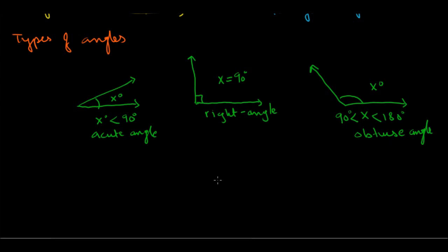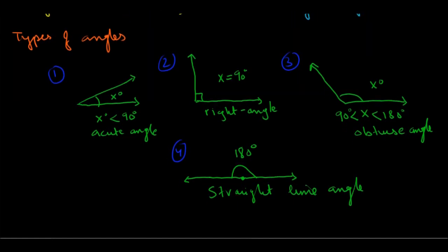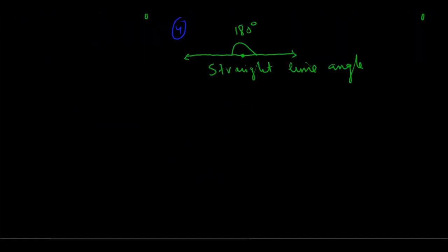A 180-degree angle is when you have two straight lines going in opposite directions from a common origination point. This angle of 180 degrees is known as the straight line angle. So the four types of angles you need for the GRE are: acute, right, obtuse, and straight line — simple and easy to remember.